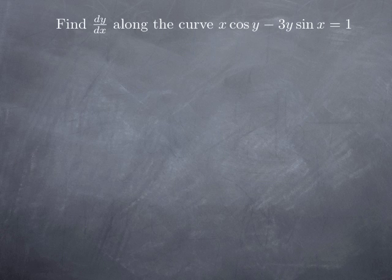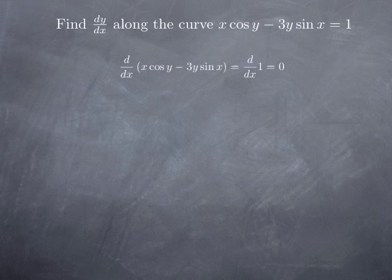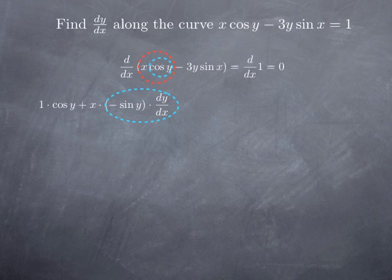One more example. We want to find dy over dx along the curve x cosine(y) minus 3y sine(x) equals 1. Just as before, we differentiate both sides with respect to x, treating y as a function of x. The right-hand side is a constant, so we get 0. On the left-hand side, the derivative of x cosine(y) is a product, so we use the product rule: derivative of the first factor is 1 multiplied by cosine y, plus x multiplied by the derivative of cosine y. Since y is a function of x, we differentiate cosine y using the chain rule.